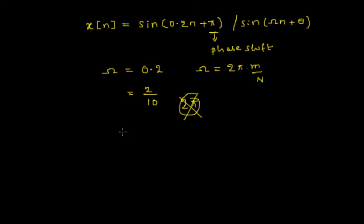So as we cannot express omega in terms of rational multiple of 2 pi we can say that the given signal is aperiodic or non-periodic.